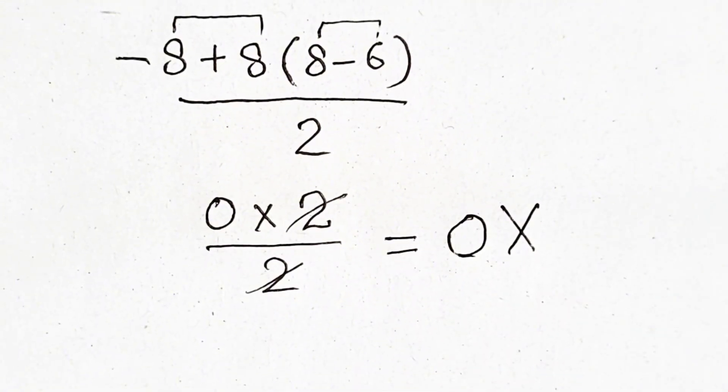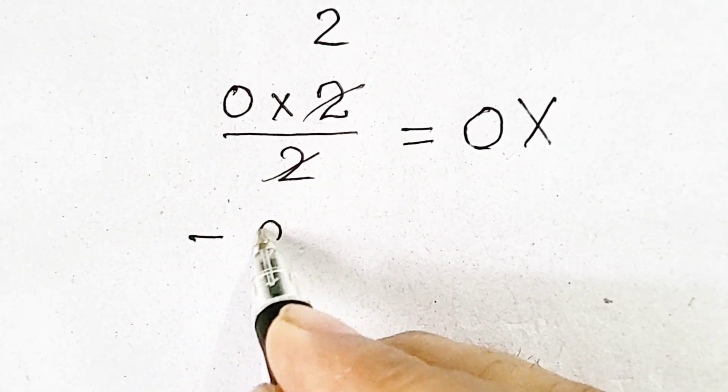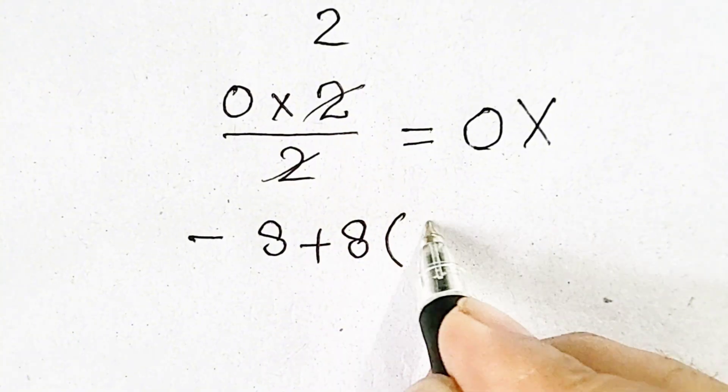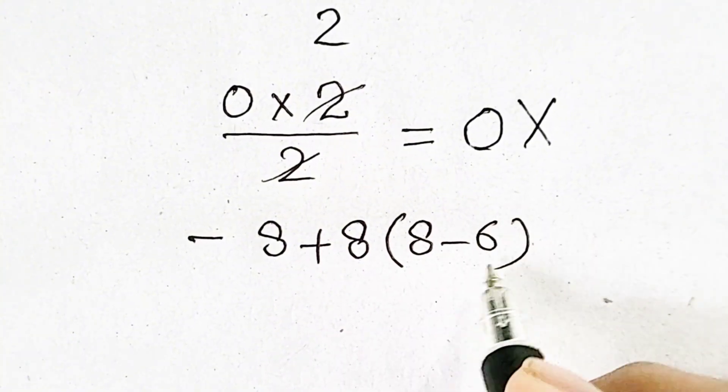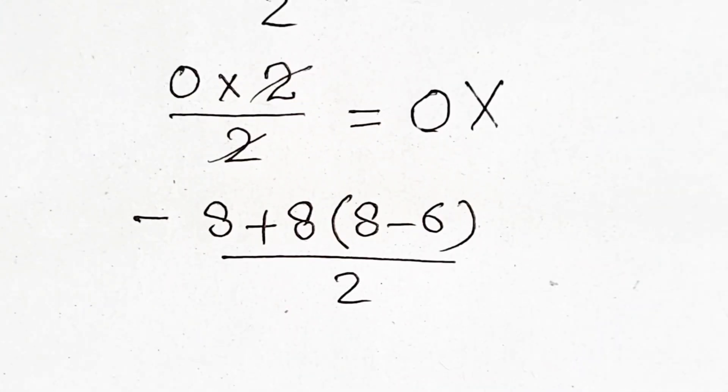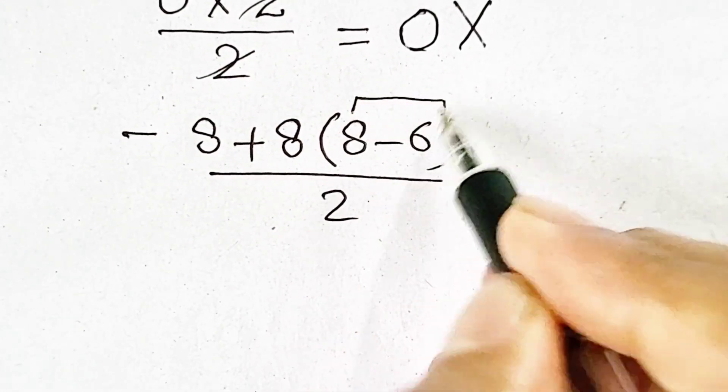Now I will solve it by obeying order of operations. The question is minus 8 plus 8 times 8 minus 6 divided by 2. According to PEMDAS rule, we have to solve parenthesis first.